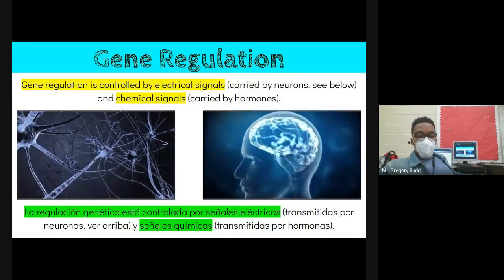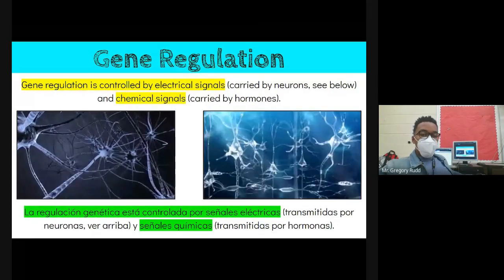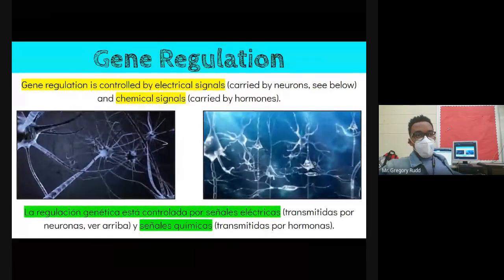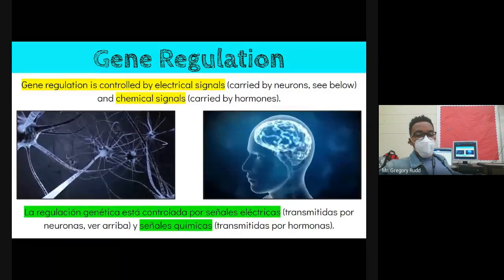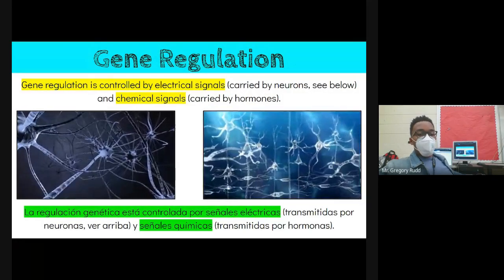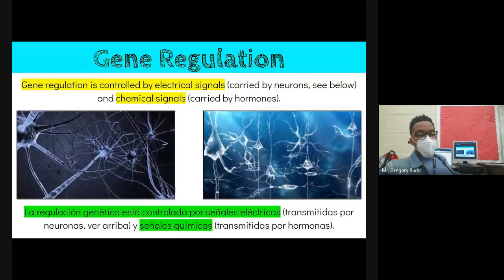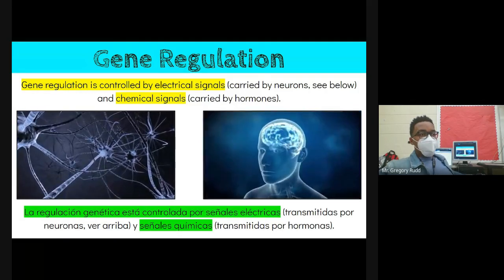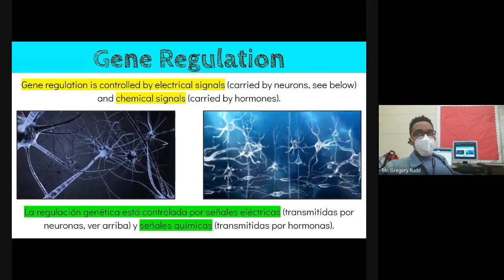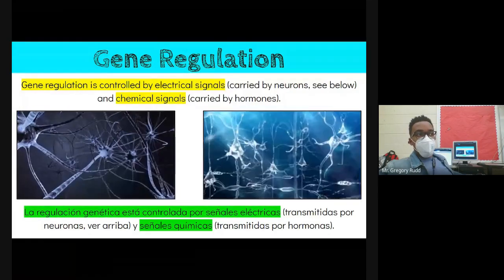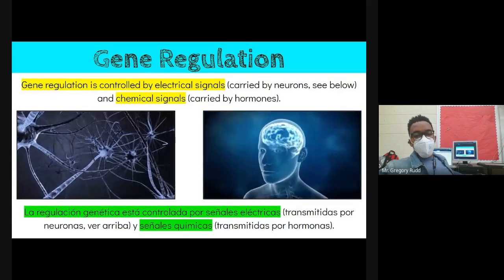This process is controlled by both electrical and chemical signals — your cells are always communicating with one another. They signal things like 'you need to produce more of this protein' or 'there's too much of this protein, so make another protein to break it down.' Cells communicate by sending electrical signals in the form of ions: sodium, potassium, calcium — what we might call electrolytes.